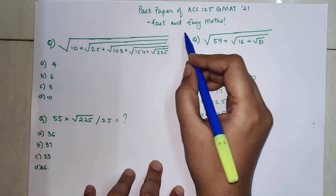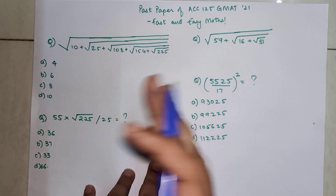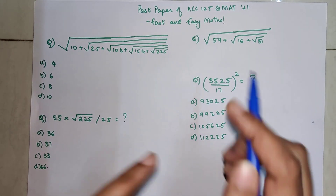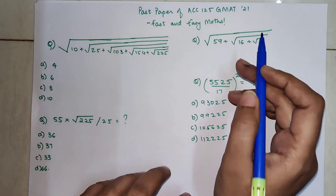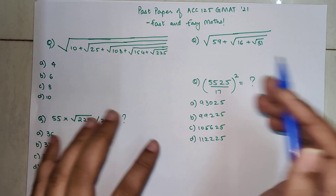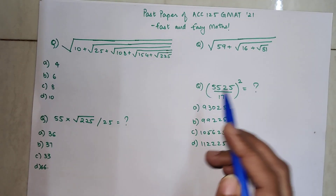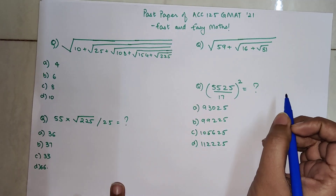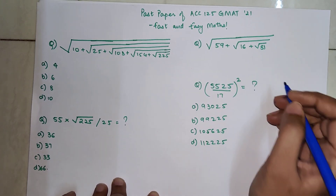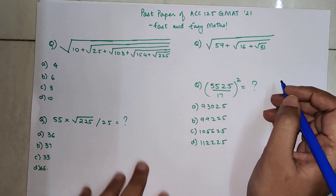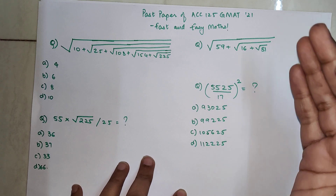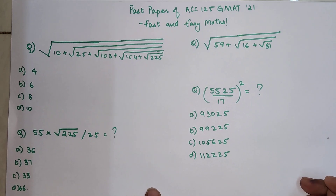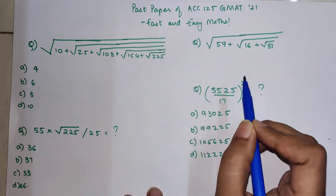Welcome everyone to my channel, Fast and Easy Math, which is dedicated to giving you tips and tricks related to mathematics. Today we are going to solve questions which were asked in ACC 125 GMAT of last year, which is 2021. All of these questions were asked in the paper — only one question was not asked, which I made to give you a hang of how to solve this kind of question. Once you get to do these orally, you will be able to solve them very quickly, in a matter of seconds.